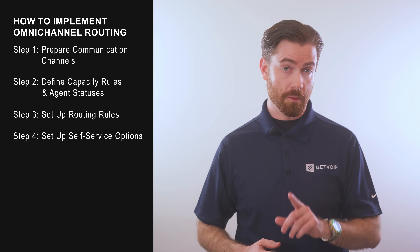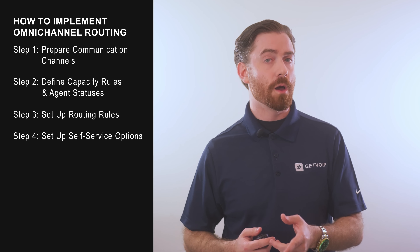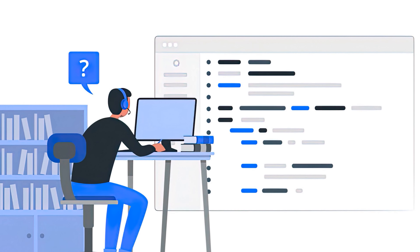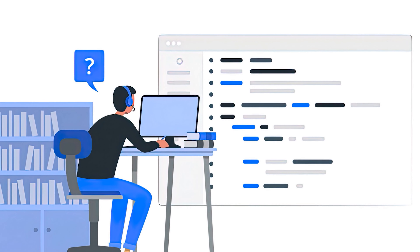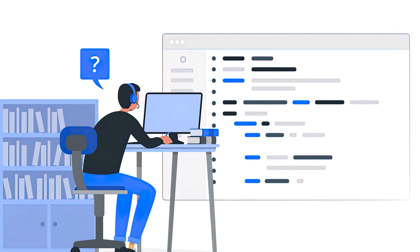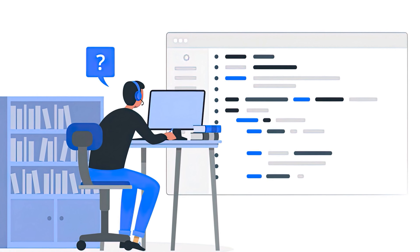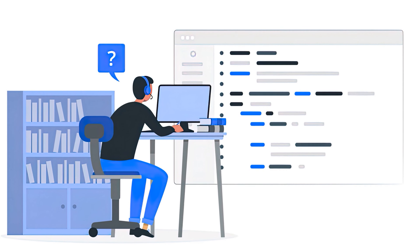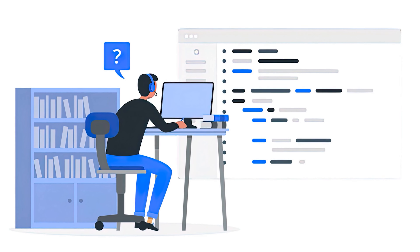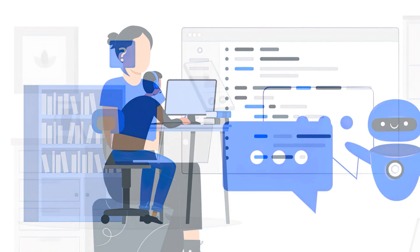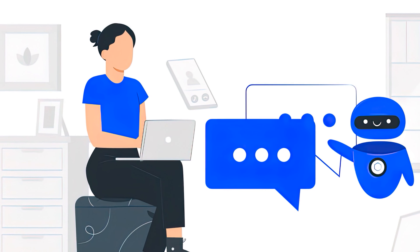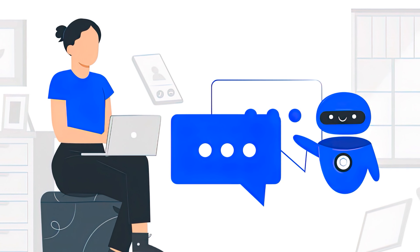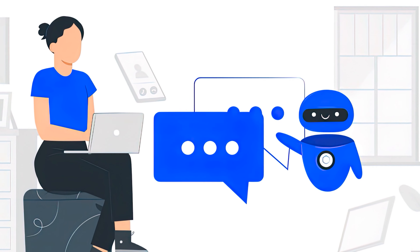Step 4: Set Up Self-Service Options. Most CCaaS providers that offer Omni-Channel Routing will include tools to create self-service options for your customers, such as a knowledge base, chatbots, intelligent virtual agents, and/or voicebots.